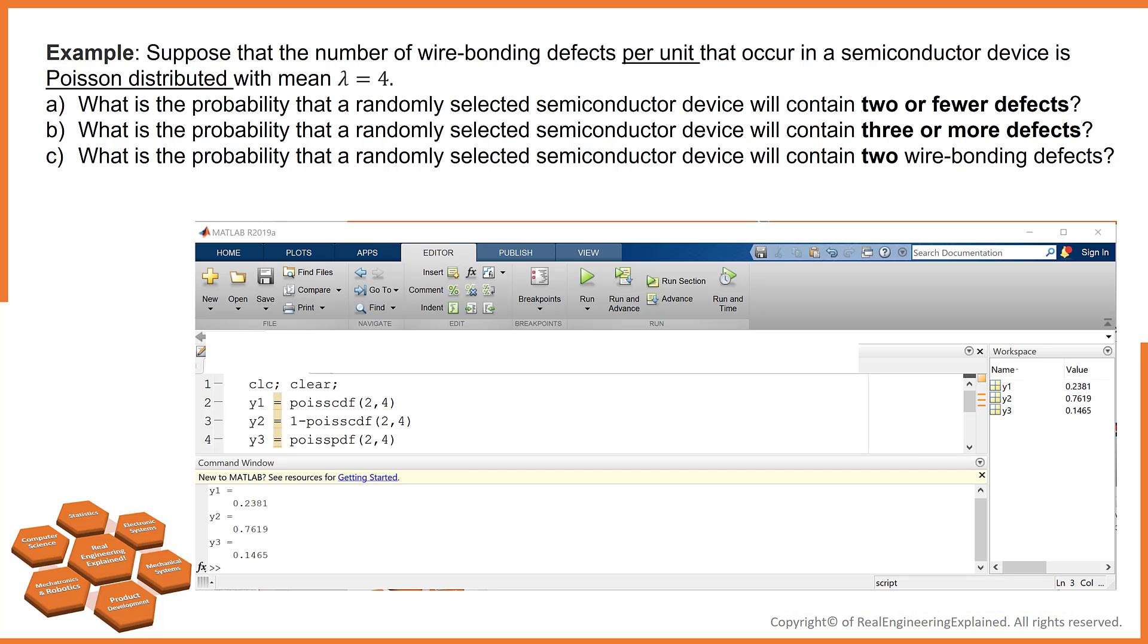Okay, let's solve this example in MATLAB. The question A is what is the probability that a randomly selected semiconductor device will contain two or fewer defects?